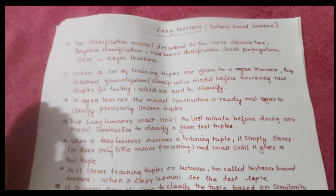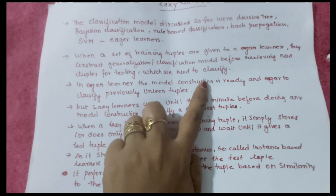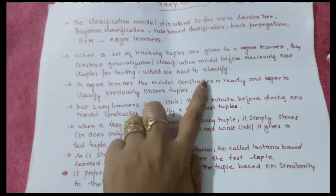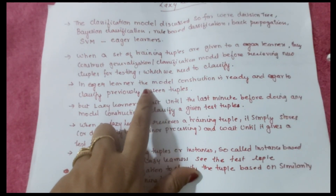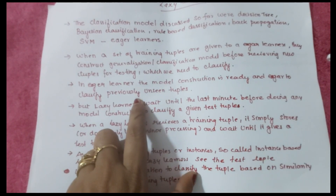Whenever training tuples were given, all those algorithms used to create their own classification model, and with this classification model they would test the test tuple. In an eager learner, the model construction is ready and eager to classify previously unseen tuples.